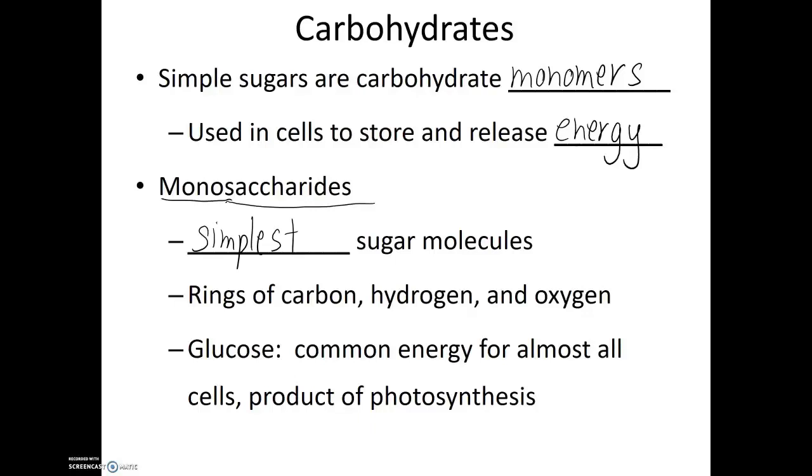The structure of a carbohydrate are rings of carbons, hydrogen, and oxygen atoms. Glucose is one of the most common monosaccharides. It is common energy for almost all types of cells. It's also one of the products of photosynthesis. The general chemical formula for glucose is C6H12O6.